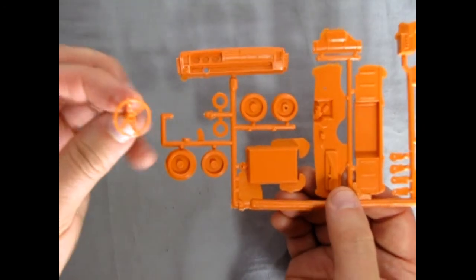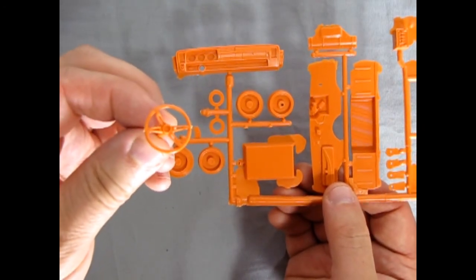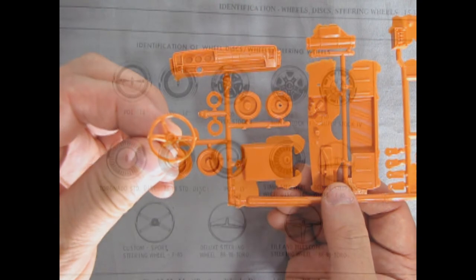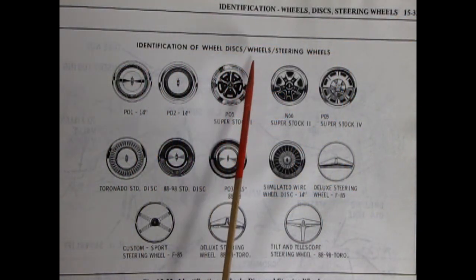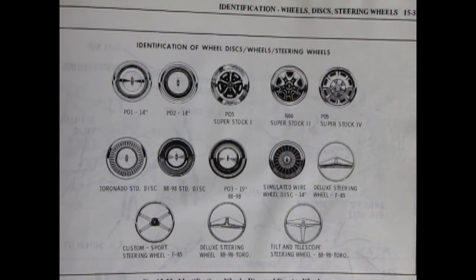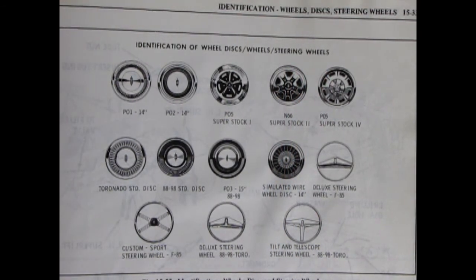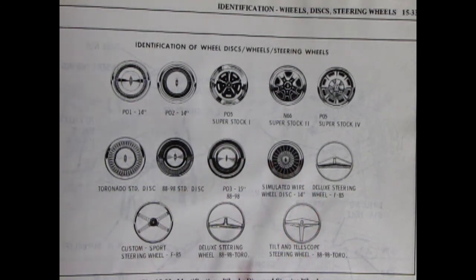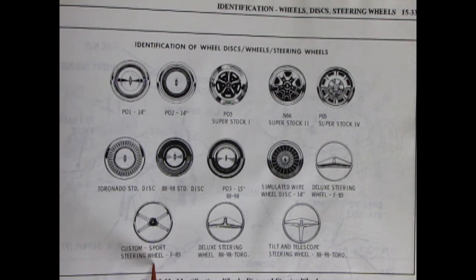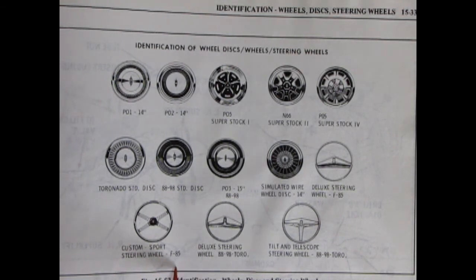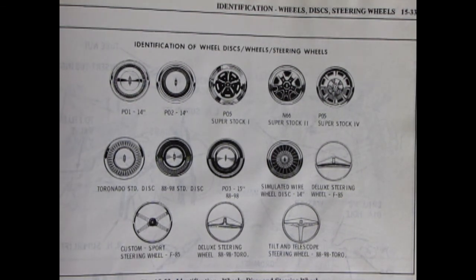There's something also really cool about this steering wheel. So let's take a look at that. This little picture here shows the identification of the wheel discs and steering wheels that were available in 1972, but they are of course from 1970.